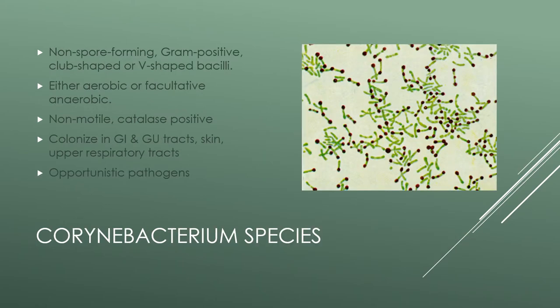The corynebacterium species is a non-spore-forming, gram-positive bacteria. They are club-shaped or V-shaped, non-motile, and catalase positive. They are divided into two major groups: corynebacterium diphtheriae and the non-diphtherial species. They are normally found on our skin, in our GI tracts, and in our upper respiratory tract, but a number of species have been identified as opportunistic pathogens that cause disease.